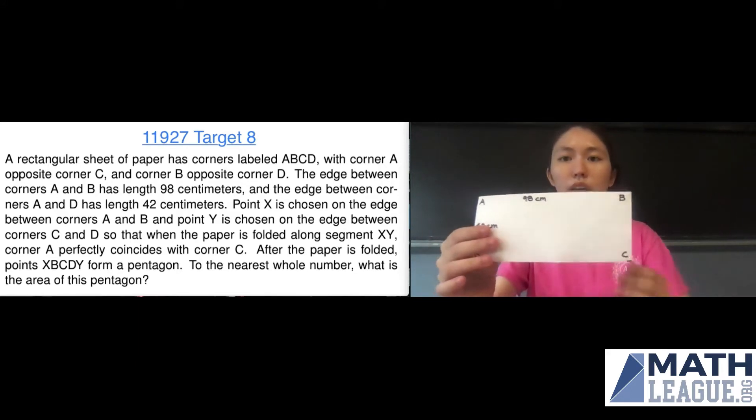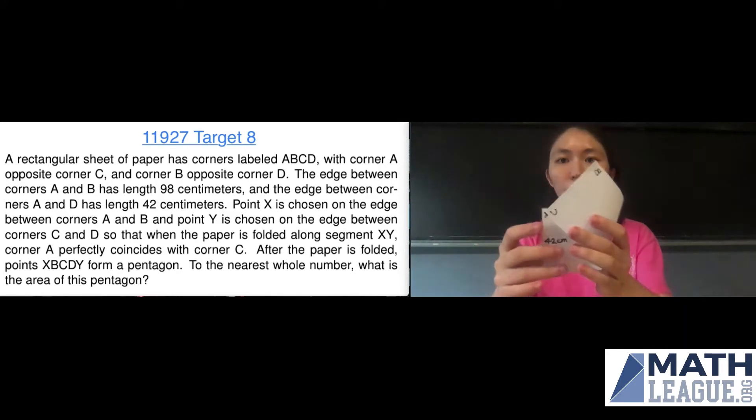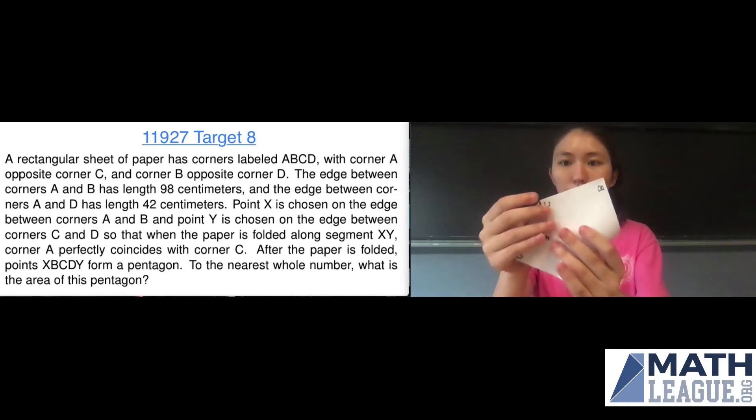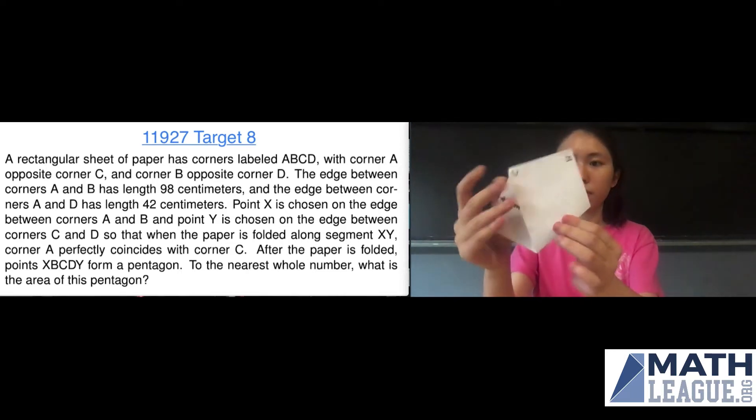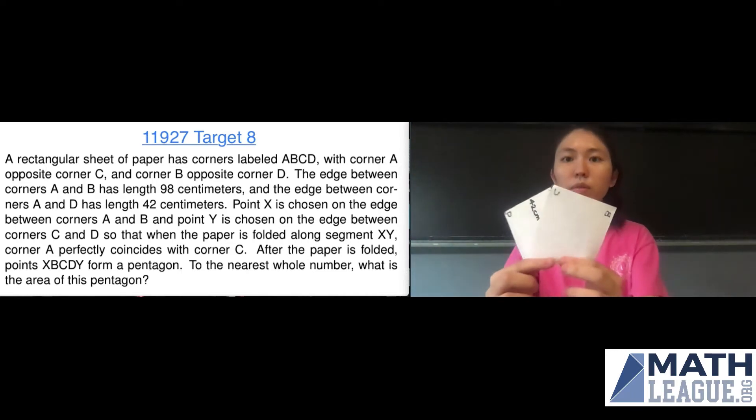So what we can do here is we want to try to fold the paper accordingly so we can see that A and C become one point. I'm going to fold the paper and then form the crease along this diagonal. We can see that A and C are the same point now. So here is our point X and here is Y.